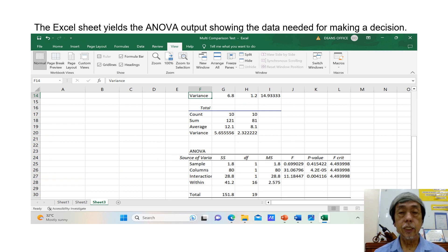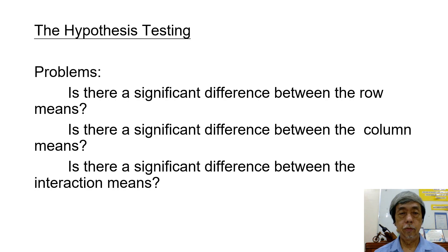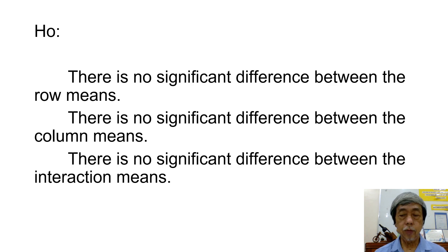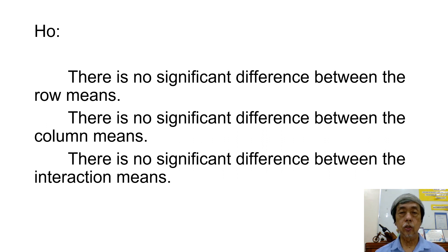The Excel sheet yields the ANOVA output showing the data needed for making a decision. The procedure for hypothesis testing starts with the problems: is there a significant difference between the row means, between the column means, and between the interaction means? The alternative hypothesis states there is a significant difference between the row means, between the column means, and between the interaction means.